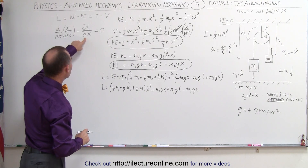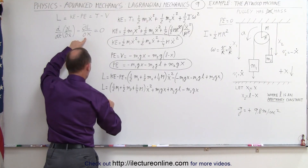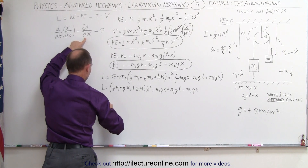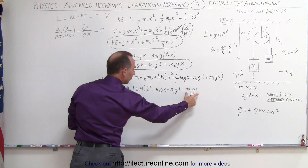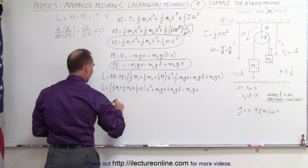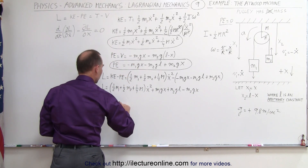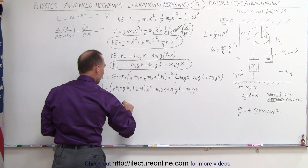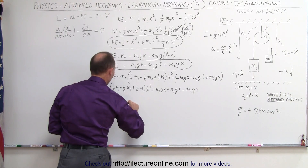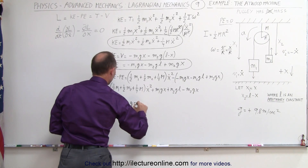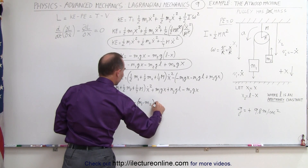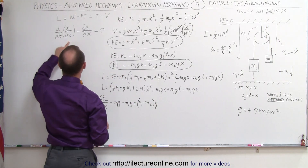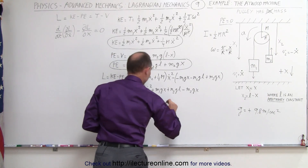Now we can go ahead and take the partial of the Lagrangian with respect to x. If we do that, the x-dot squared term goes to zero. We have two surviving terms, and the constant term goes to zero as well. We end up with m1 g minus m2 g, which can be written as m1 minus m2 times g.